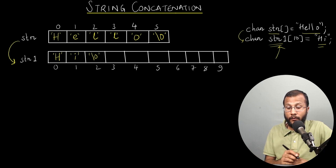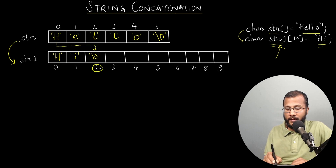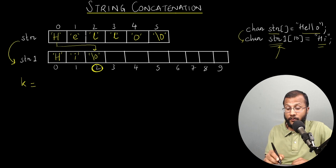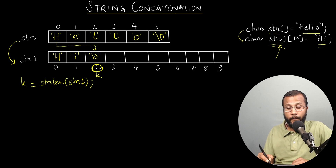The first character to copy is 'h', and it should be copied to index 2 of str1. How do I find that index 2? It is nothing but the length of str1. So let me call it k, where k is the length of str1. I'll find the length by calling strlen(str1), which gives us 2. So k is now 2.